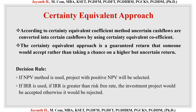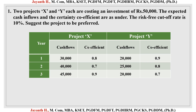Now we will look into the problem and understand much more about the Certainty Equivalent Approach. Two projects X and Y each are costing an investment of rupees 50,000. This rupees 50,000 is the initial investment or original investment given in the problem. The expected cash inflows and the Certainty Coefficient are as given. The risk-free cutoff rate is 10%. We have been given information for three years. There are totally two projects: project X and project Y. The uncertain cash flows have to be converted into certain cash flows through coefficient values, which are also provided.